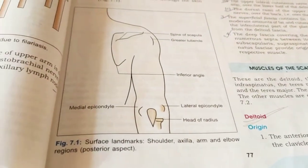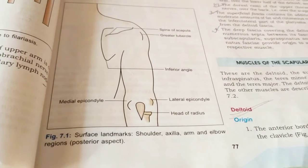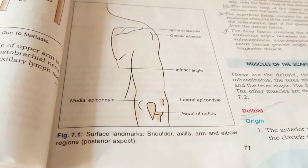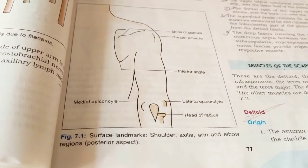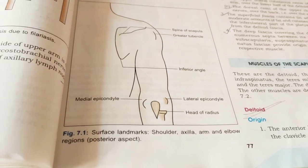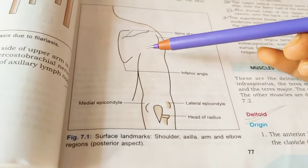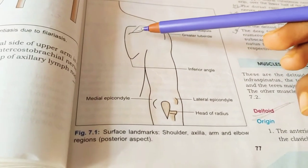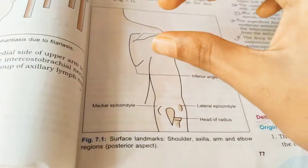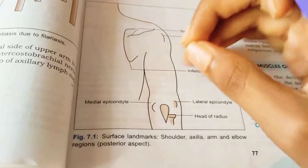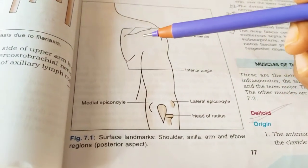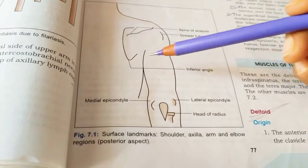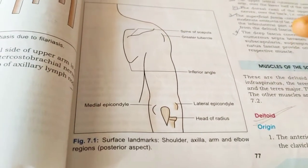Let's begin with the scapular landmarks. The surface landmarks of the scapula can be seen here. The scapular region, or shoulder region, mainly comprises the structures which are closely related to and surrounding the shoulder joint. The scapula is nearer to the shoulder joint, and thus the structures related to the scapula are also related to the shoulder joint.